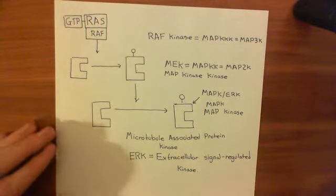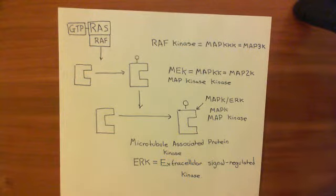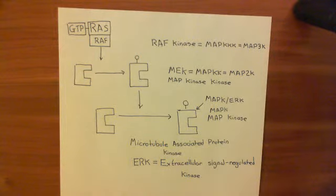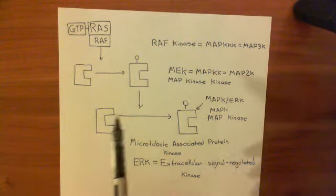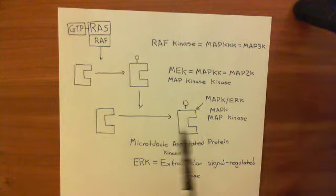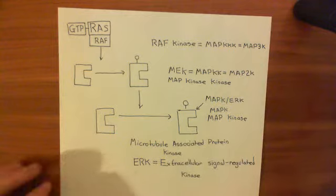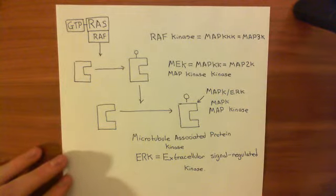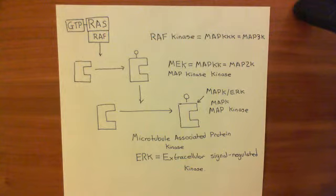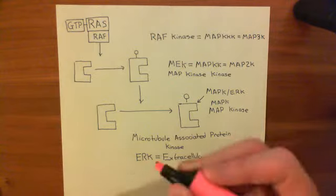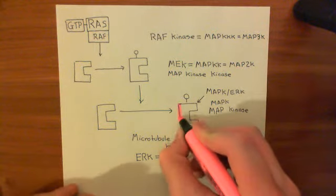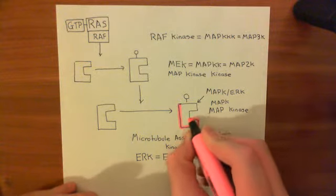The RAS kinase adds a phosphate group onto the MEK enzyme, which is also a kinase, sometimes referred to as the mitogen-activated protein kinase kinase. It then phosphorylates and activates the mitogen-activated protein kinase, or MAP kinase, sometimes referred to as ERK (extracellular signal-regulated kinase), which is the main enzyme of this pathway. This entire pathway is called the MAP kinase ERK pathway, named completely after this enzyme.